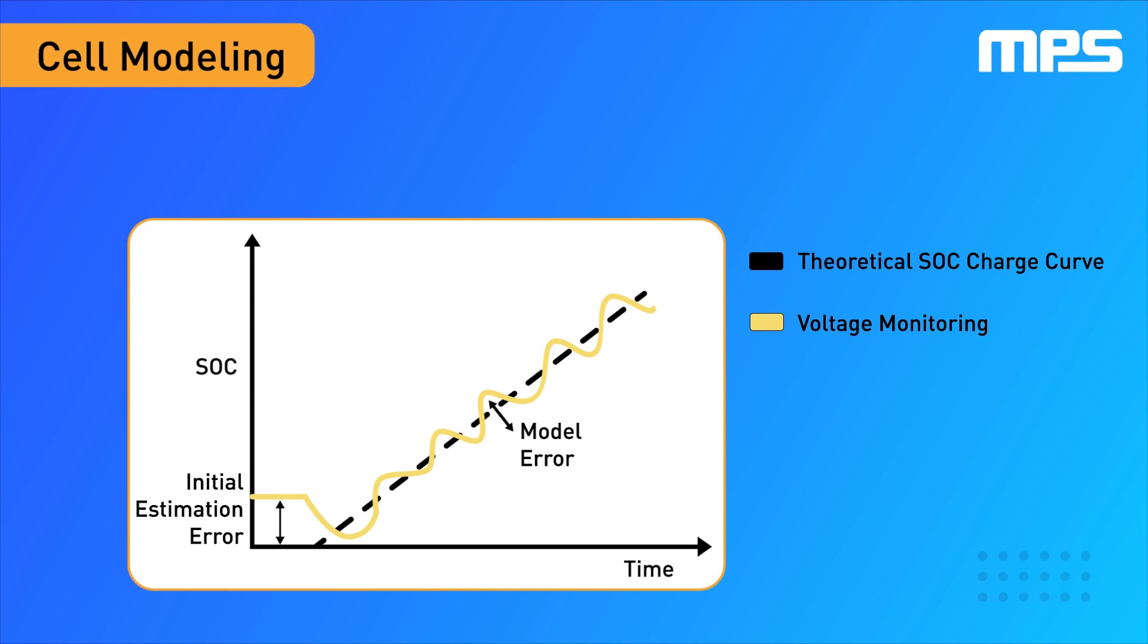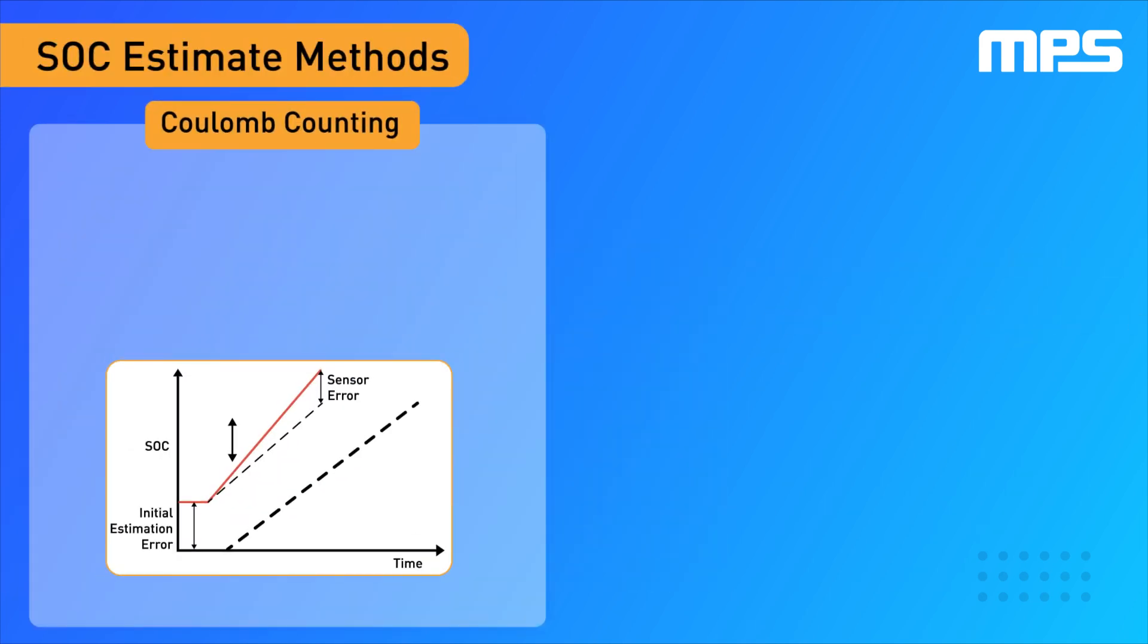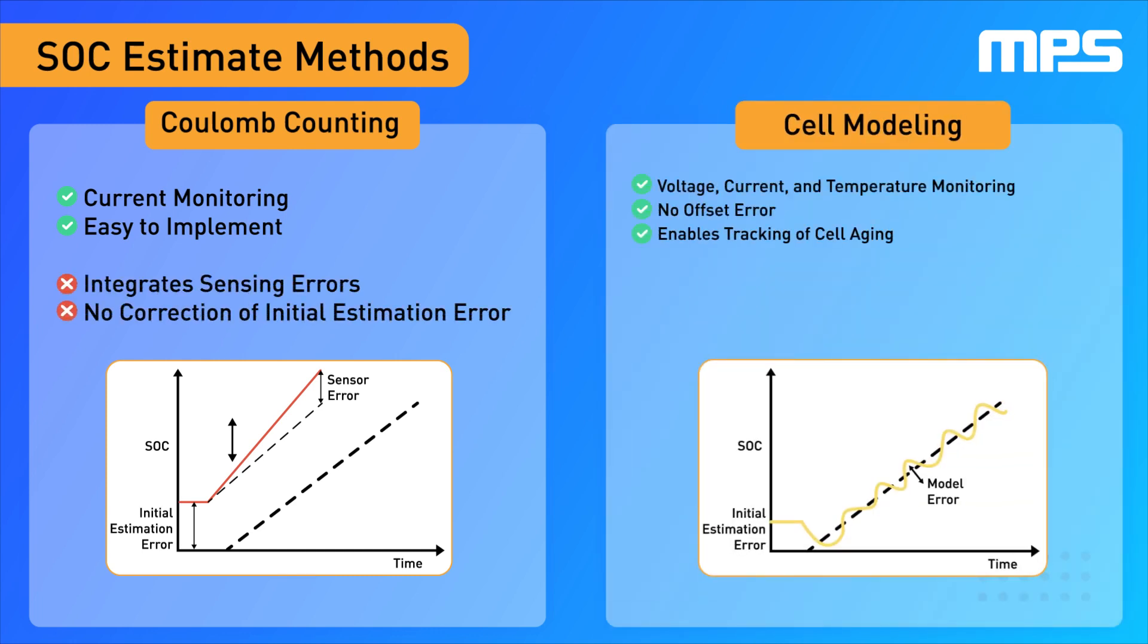Furthermore, battery parameters change over time, requiring the cell model to be tracked and updated to maintain the same level of accuracy. In summary, Coulomb counting is very simple to implement and can be very accurate, but does not guarantee convergence with the true SOC. On the other hand, cell modeling enables convergence, but its precision depends on the model's accuracy.